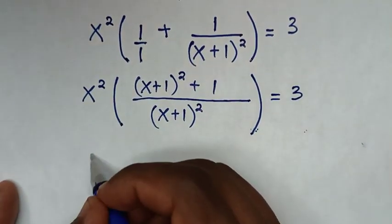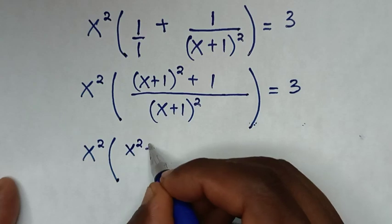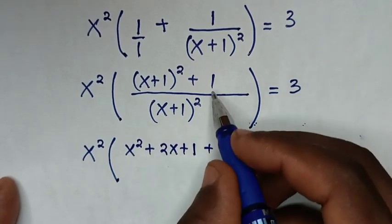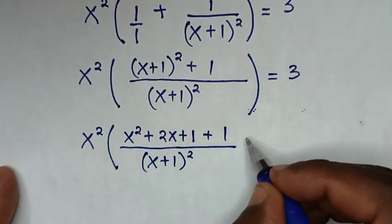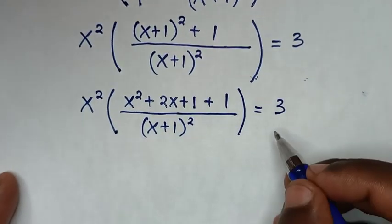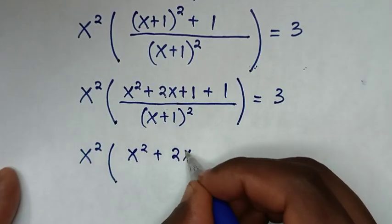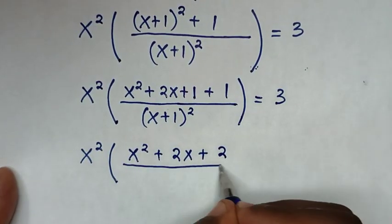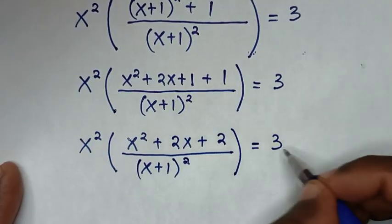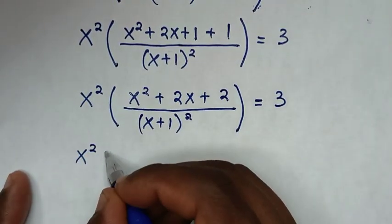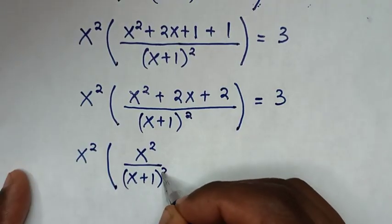Then in the next step, it will be x² times the bracket. We expand (x+1)², so it will be x²+2x+1, then plus 1 over (x+1)², bracket equals 3. Then it will be x²+2x+1+1 = x²+2x+2 over (x+1)², bracket equals 3. Then it will be x² times the bracket; we take x²/(x+1)² plus...